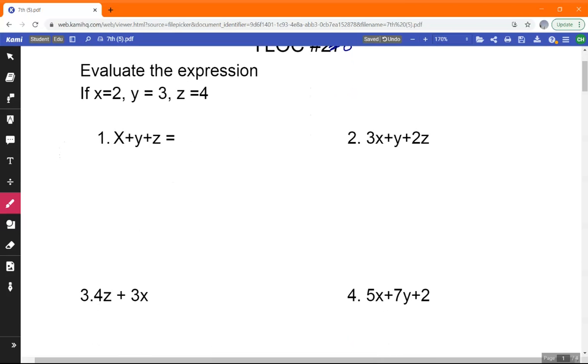Evaluate the expression if x equals 2, y equals 3, and z equals 4. So we're just going to replace these letters with the number that they correspond to. So x would be 2 plus 3, that's my mistake, 2 plus 3 plus 4. So that would be 9.